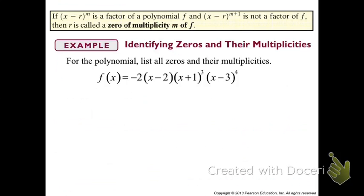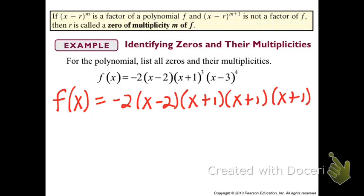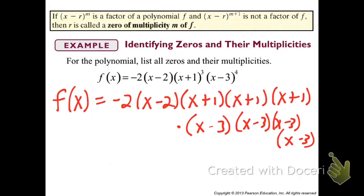Let's look at a concrete example. For this polynomial f of x, we're trying to find all the zeros and their multiplicities. Multiplicity means how many times that factor presents itself within the polynomial. If we multiply this out — f of x equals negative 2 times these factors — we can see that x plus 1 is a factor three times because it's to the third power, and x minus 3 occurs four times. So we actually have that many factors.